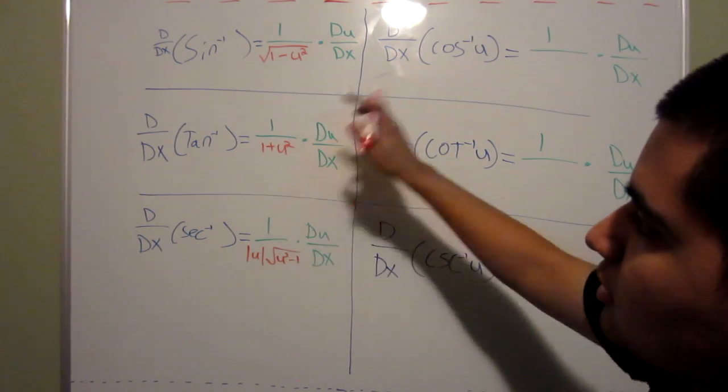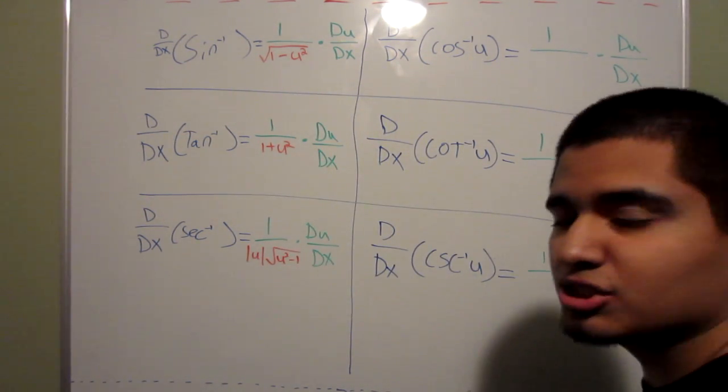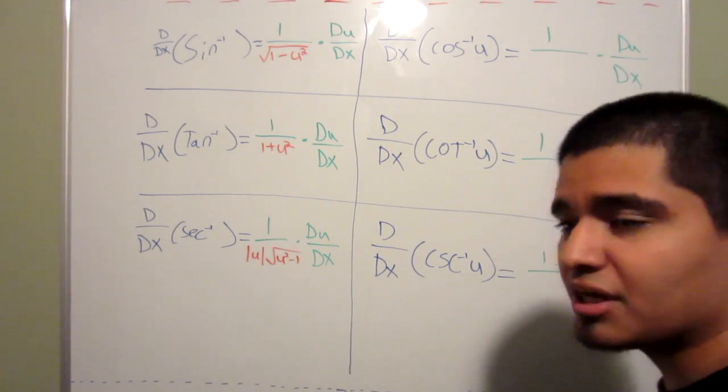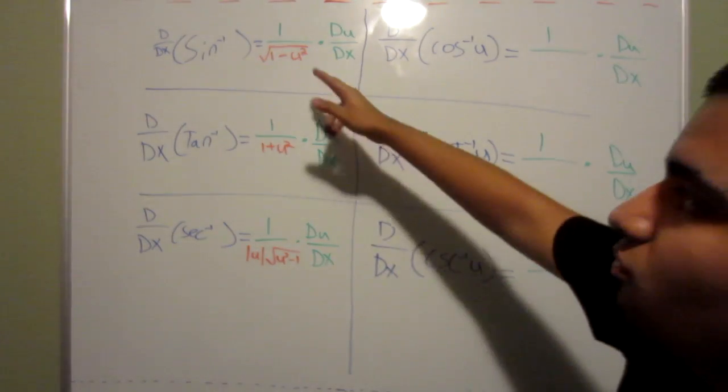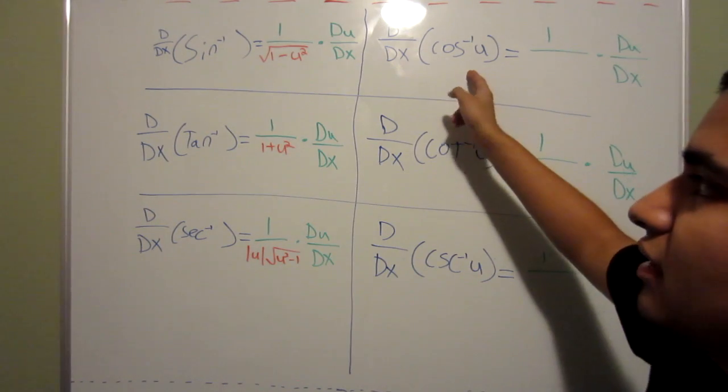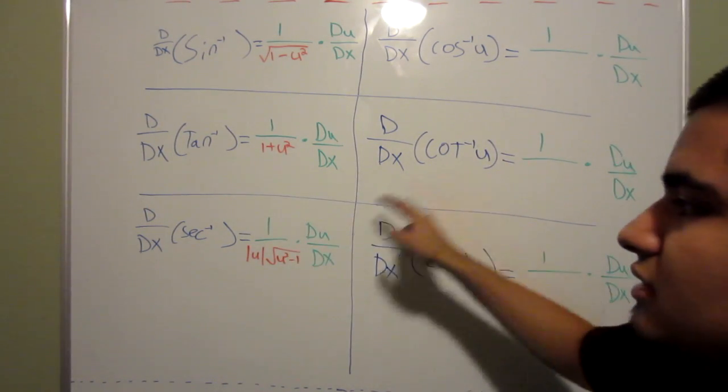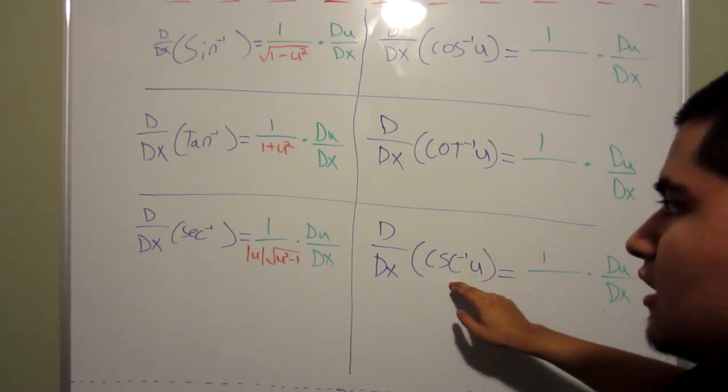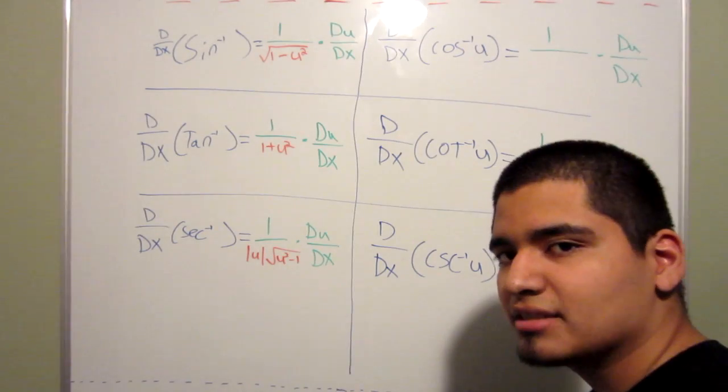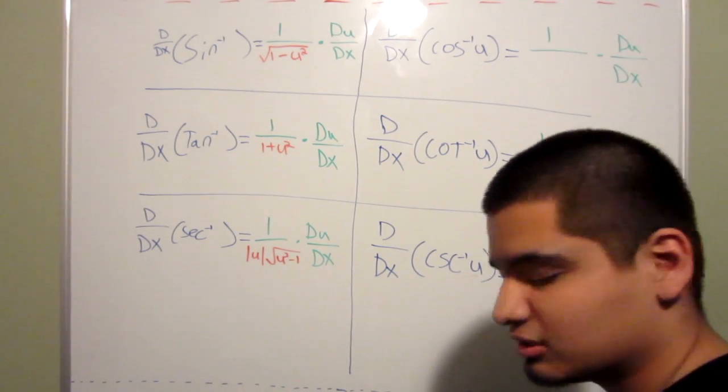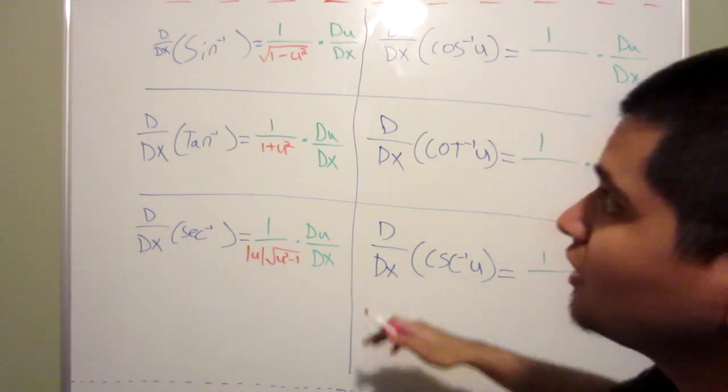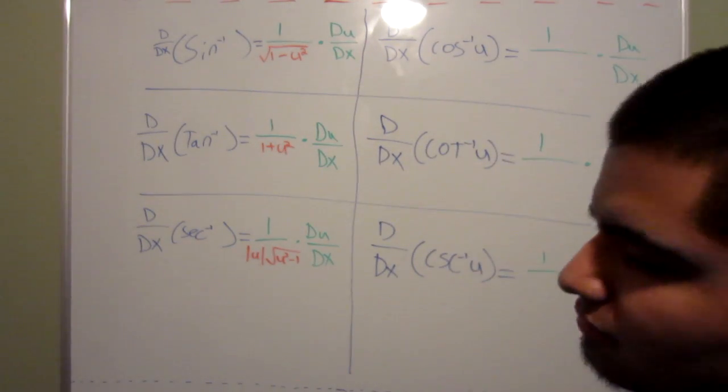But another way to know it is to write out another chart. If you saw the other shortcut, this is just another chart, where you write it as sine, cosine, tangent, cotangent, secant, cosecant. So you write it in the same way as the derivative of the regular trig functions.